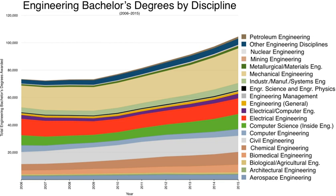Universities also offer doutoramento (doctorate) programs in engineering. Holding an academic degree in engineering is not enough to practice in Portugal — one must be admitted as a member of the Ordem dos Engenheiros (Portuguese Institution of Engineers). At the Ordem dos Engenheiros, an engineer is classified as E1, E2, or E3 grade accordingly with the highest engineering degree held.